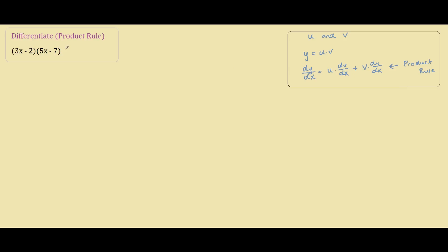So in this problem let's call this y equals (3x-2) times (5x-7) and we will call this one u, this whole term here, and we will call this term v.